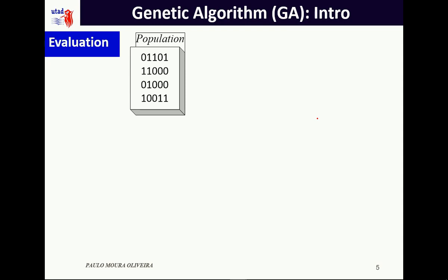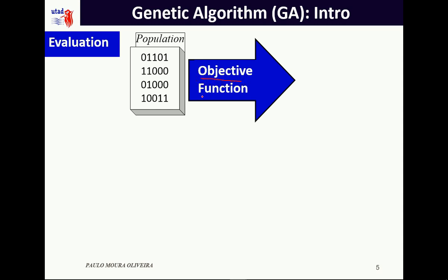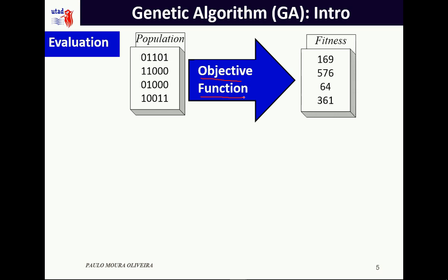After we have the random population — which is totally blind concerning the problem — we need an objective function that is problem dependent. In this case we are going to use a toy problem, a quadratic function. The fitness values for each element are: the first element is 169, the second is 576, the third is 64, and the fourth is 361.